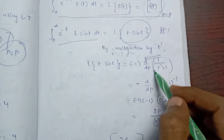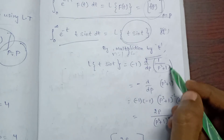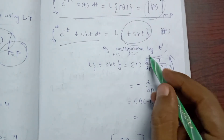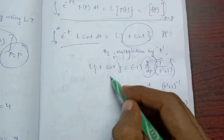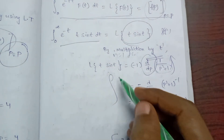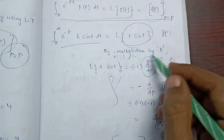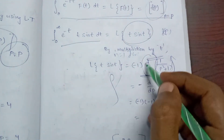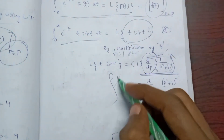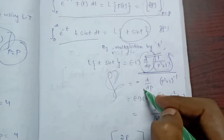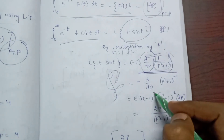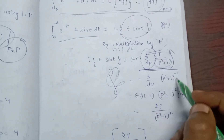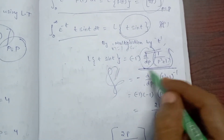Now p² + 1 is in the denominator. We differentiate: minus d/dp of (p² + 1)^(-1), giving minus 1 times (p² + 1)^(-2) times the inner differentiation of (p² + 1), which is 2p. So we get minus times (-2p) divided by (p² + 1)², which simplifies to 2p over (p² + 1)².